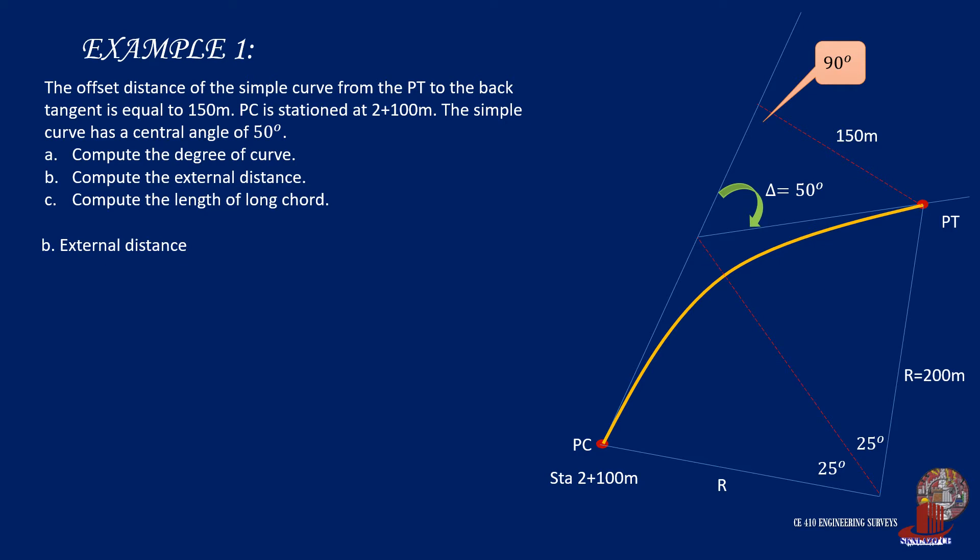The next requirement is the external distance. At this point, since we have the values of the radius and delta, we can simply use them in the formula for external distance, which is E equals R times secant of half of delta minus 1. We compute E as 25.48 meters.